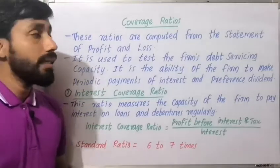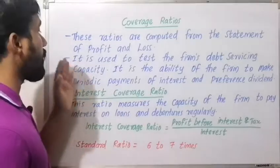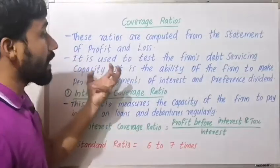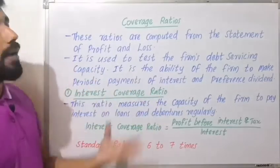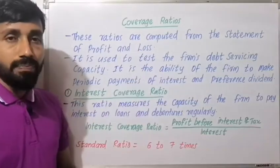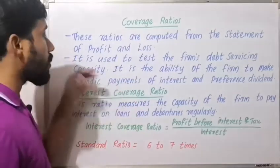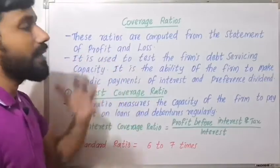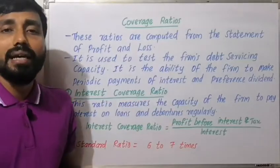Coverage ratios are calculated to test the firm's Debt Servicing Capacity. Debt Servicing Capacity means it is the ability of the firm to make periodic payments of interest and preference dividend. It is the ability to calculate the coverage ratios.